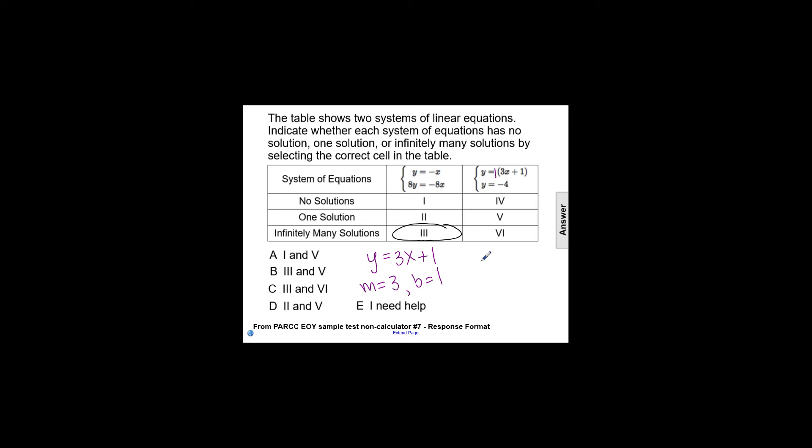The second equation, y equals negative 4, is in slope-intercept form as well. You just don't have an x variable, meaning our slope is 0, and the constant is negative 4, so that's our y-intercept.